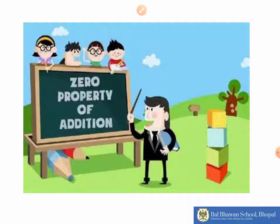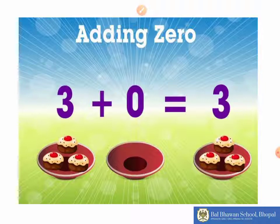Let us talk about zero property of addition. According to this, when you add zero to a number, result is the number itself. For example, if we are adding nothing, of course we will get the amount as it is.